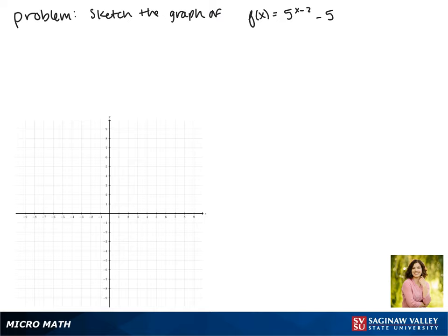Today we'll be graphing the function f of x equals 5 to the x minus 2 minus 5. We'll start by looking at the graph of the parent function f of x equals 5 to the x.